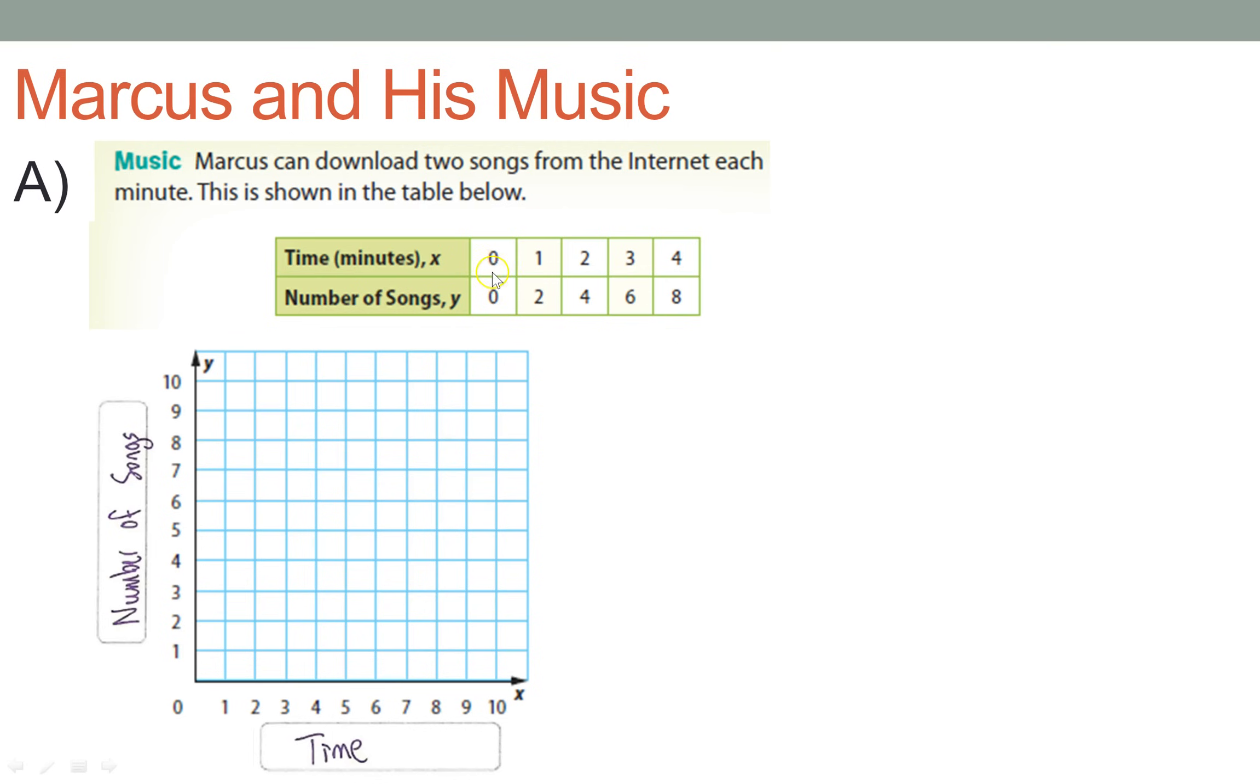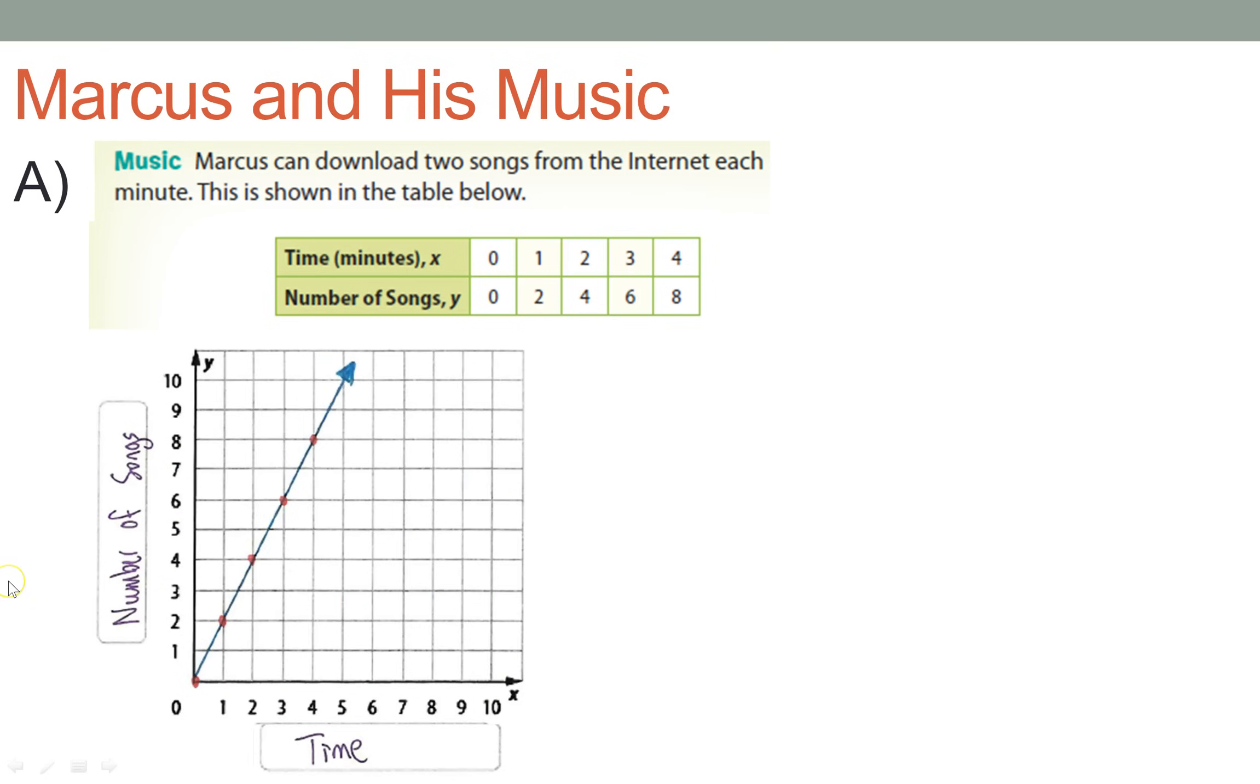Using each of these ordered pairs, I know that zero, zero is here. The next minute is one minute, and I know that's at two. And if I keep on going, I can plot the points and connect the dots, and I have a line.